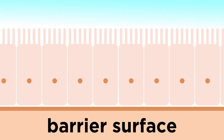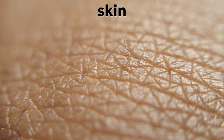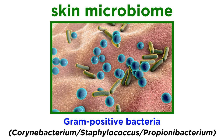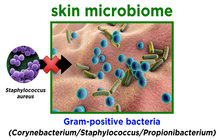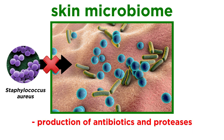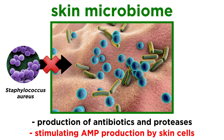Now that we know the basics these surfaces have in common, let's go through some of the most important barrier surfaces. Let's start with the skin. The average adult human has two square meters of skin covering their body, making it the largest organ in the body and a massive surface area the body needs to keep closed off to pathogens. The skin microbiome mainly consists of gram-positive bacteria like Corynebacterium, Staphylococcus, and Propionibacterium. These skin-colonizing bacteria have multiple strategies to prevent colonization of pathogens like Staphylococcus aureus, including direct strategies like production of antibiotics and proteases that can kill S. aureus, as well as indirect ones like stimulating AMP production by skin cells.